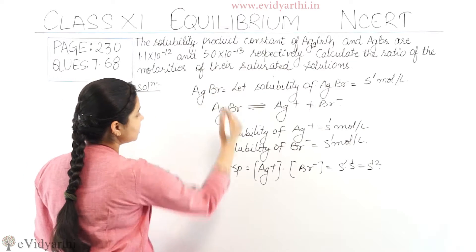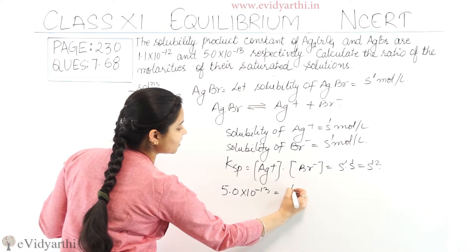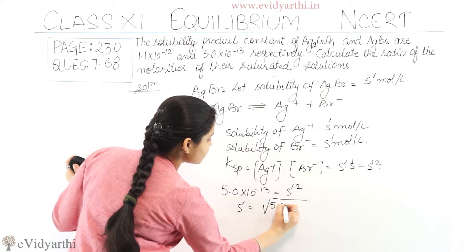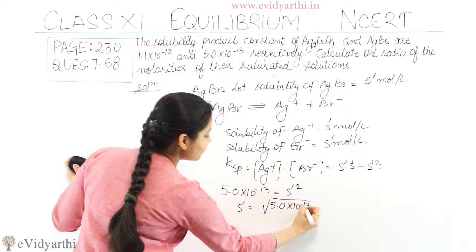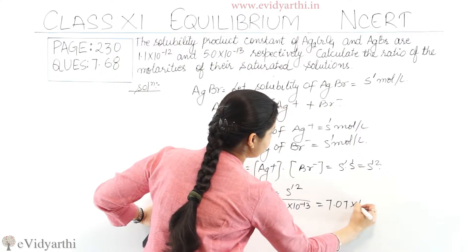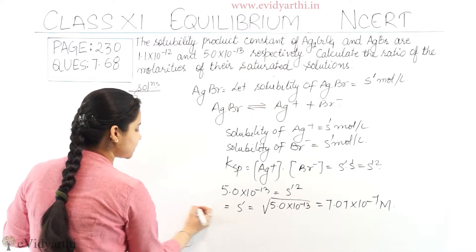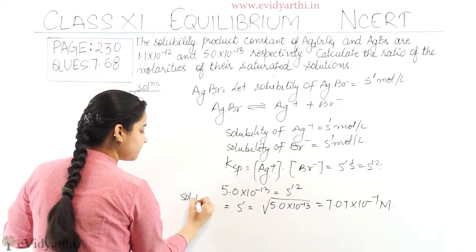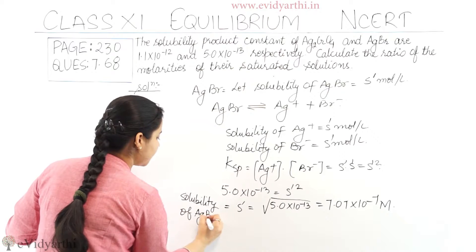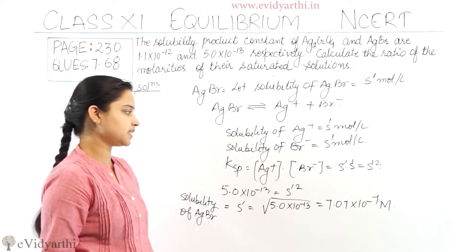The KSP value given is 5.0×10⁻¹³, which equals S'². So S' equals the square root of 5.0×10⁻¹³, and when calculated the answer is 7.07×10⁻⁷ molar. So S' is the solubility of AgBr, which is 7.07×10⁻⁷ molar.